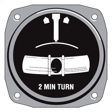In the turn coordinator, the gyro is canted 30 degrees from the horizontal so it responds to roll as well as yaw. The display contains hash marks for the pilot's reference during a turn. When the needle is lined up with a hash mark, the aircraft is performing a standard rate turn, which is defined as 3 degrees per second, known in some countries as rate 1. This translates to 2 minutes per 360 degrees of turn — a complete circle.